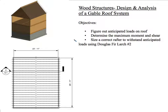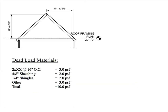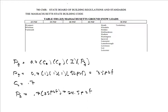Welcome back. This is the second part video for the design and analysis of a gable roof system. In our last video we found the dead load and the snow load the gable roof is going to see. The snow load depends on where you live — maybe snow doesn't govern and it's just a roof live load. For this example we're in New England, so our snow load is 24.5 pounds per square foot.